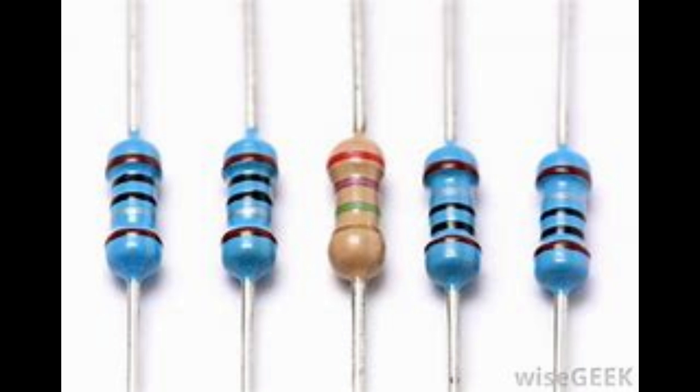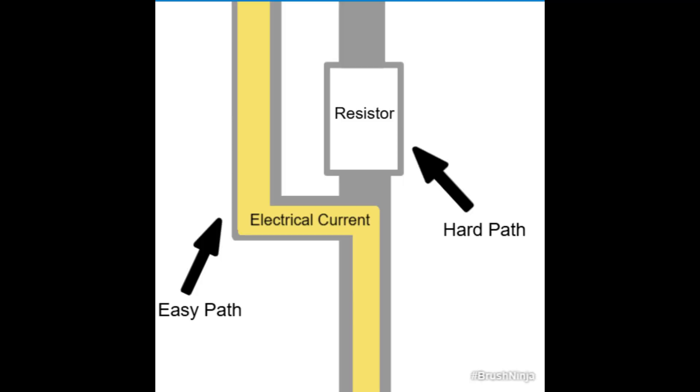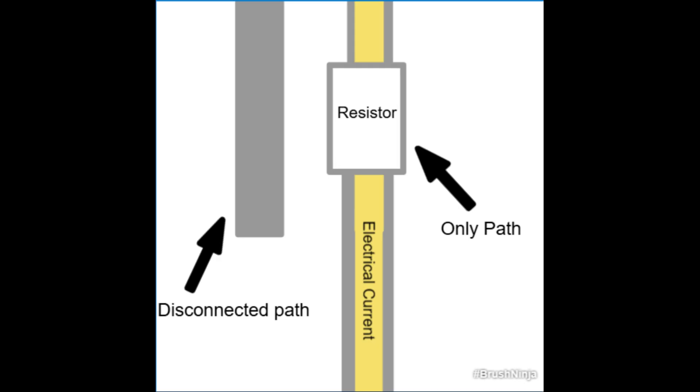Resistors need to be explained because they redirect current in circuits. Electrons want to take the easy path rather than the difficult one. When there is a resistor and no other paths for the current to flow, it has to go through the resistor and therefore gets slowed down.